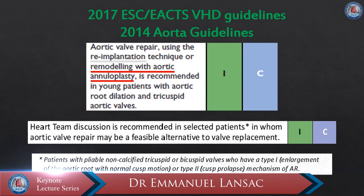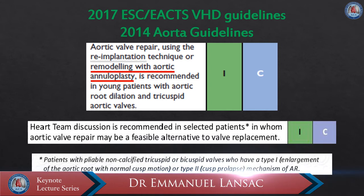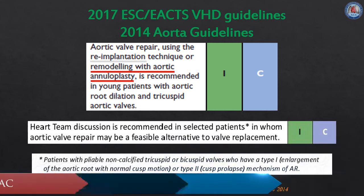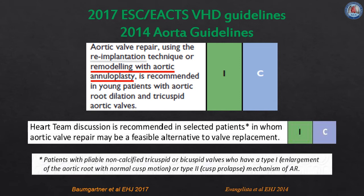A dilated aortic annulus greater than 25 to 28 mm, if left untreated, is clearly documented as a major risk factor for failure of bicuspid and tricuspid aortic valve repair. Aortic annuloplasty efficiently addresses this issue, aiming at a sustained long-term outcome by reducing the dilated aortic annulus and improving the surface of coaptation. This is similar to the case of mitral valve repair.